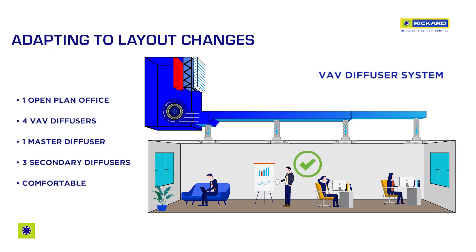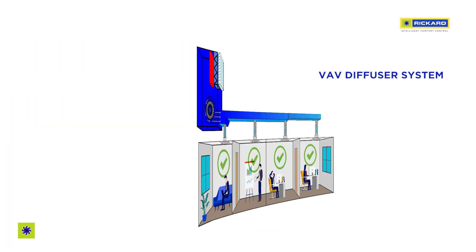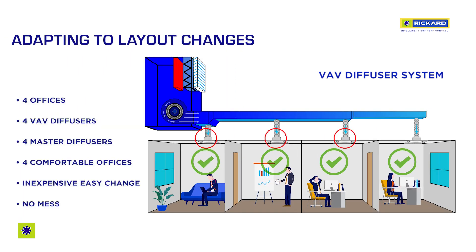Record VAV diffusers have been designed to be easily upgraded to control a new zone. The upgrade can be done by simply adding an onboard controller for on-diffuser sensing and control, or by adding a wired or wireless wall thermostat for remote sensing and control. These changes can be done without the need to open the ceiling or change ducting. The occupants can continue to enjoy a comfortable environment with very little expense, mess and disruption.